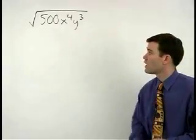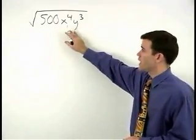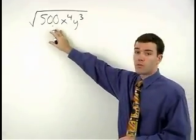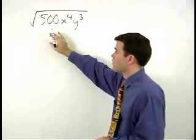To simplify the square root of 500x to the fourth, y to the third, we start by making a factor tree for 500.